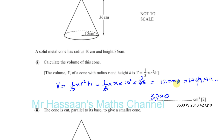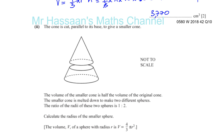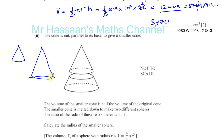Now for part B: the cone is cut parallel to its base to give a smaller cone, and the volume of the smaller cone is half the volume of the original cone. The smaller cone is then melted down to make two spheres, and the ratio of the radii of the two spheres is 1 to 2. We need to calculate the radius of the smaller sphere.